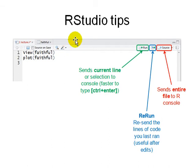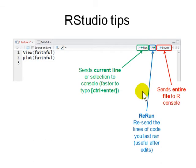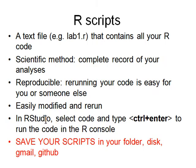RStudio has one more thing: at the top there are buttons to run code. You can run the current line, or rerun the code you ran before, or source the whole file. The buttons are there — you just have to use them when you need them.